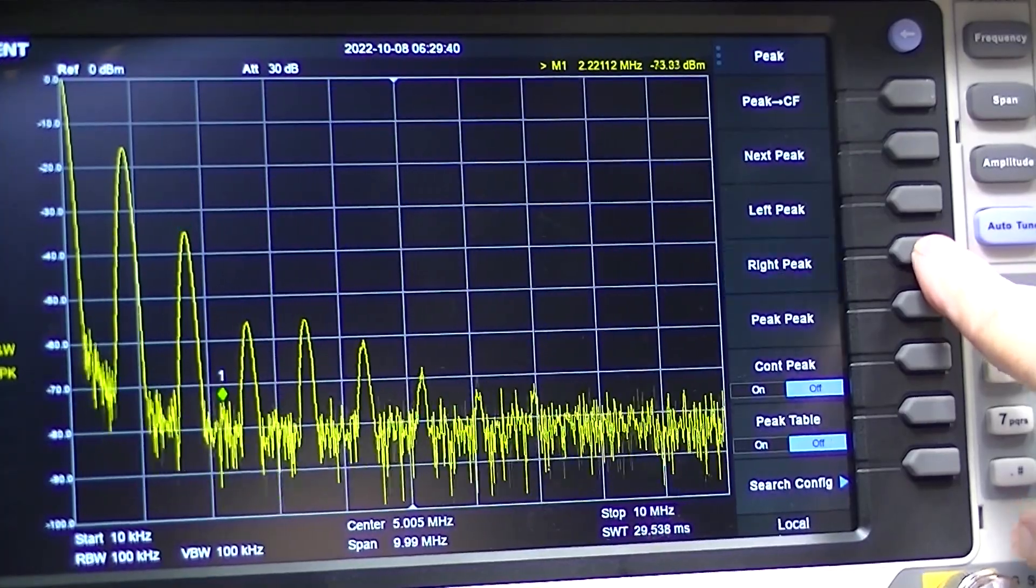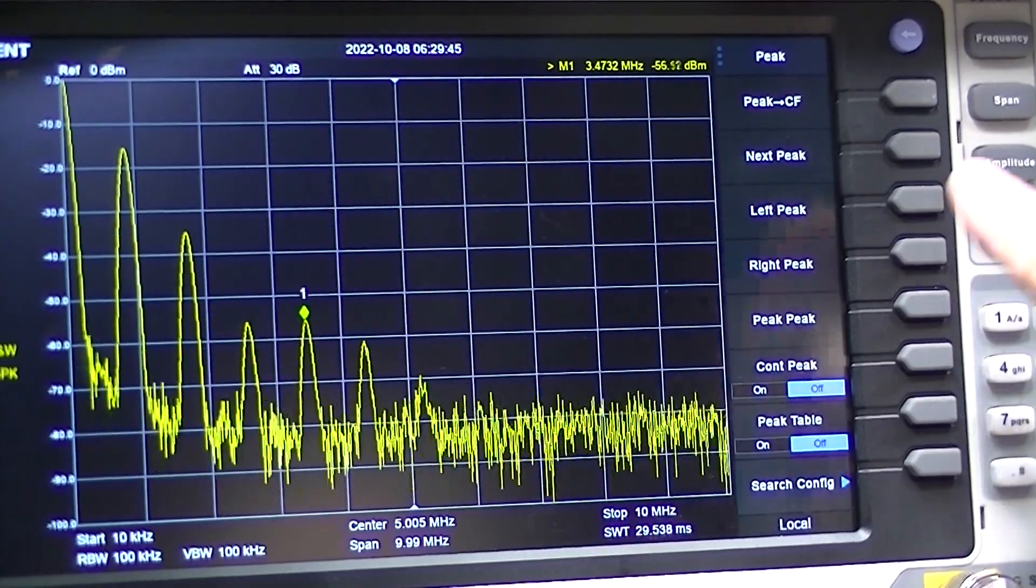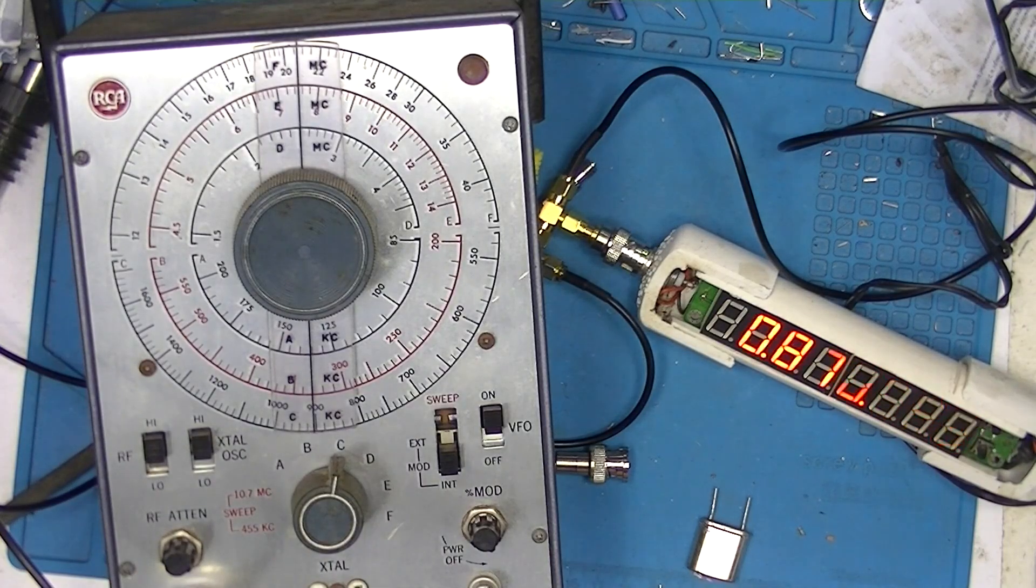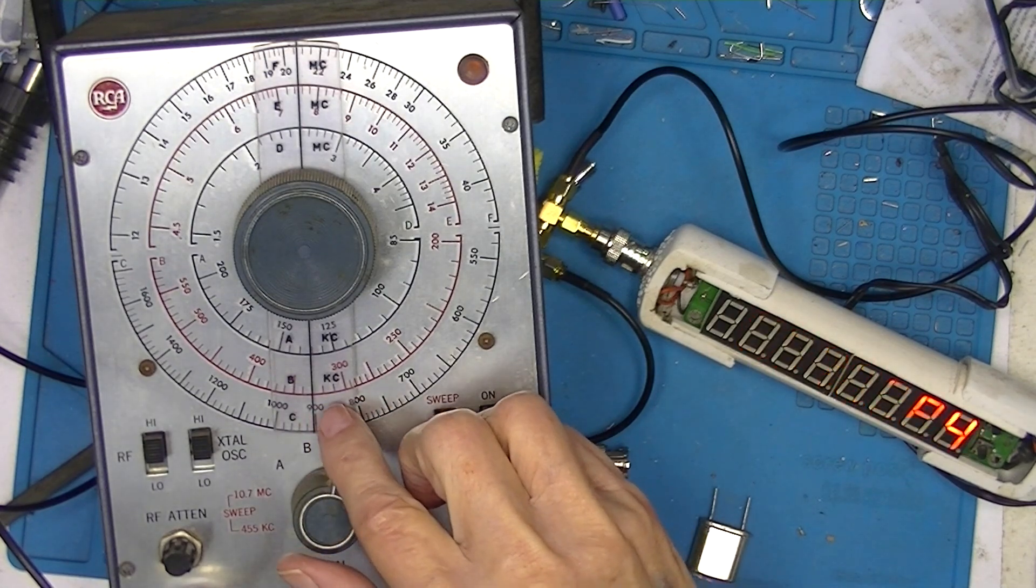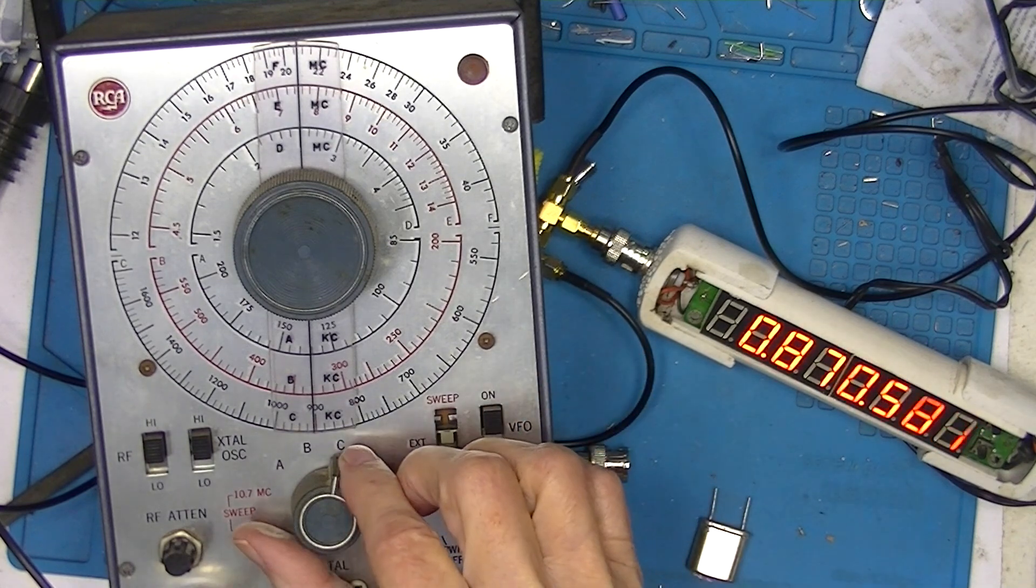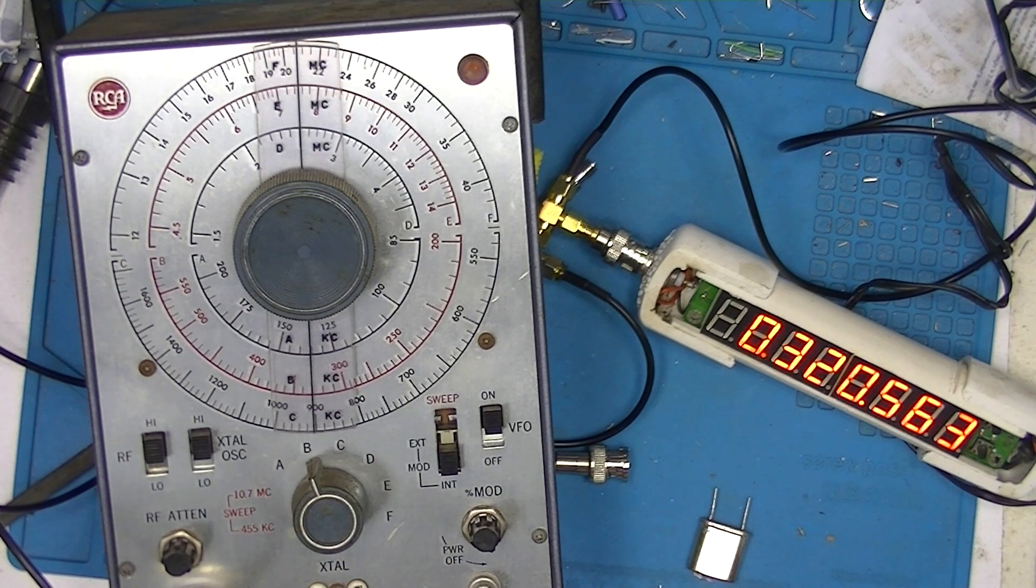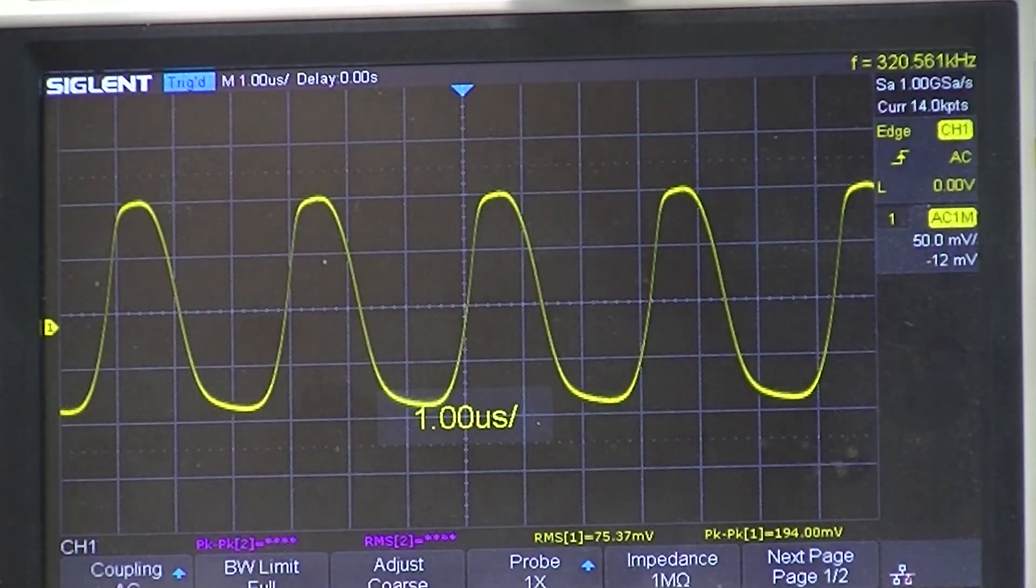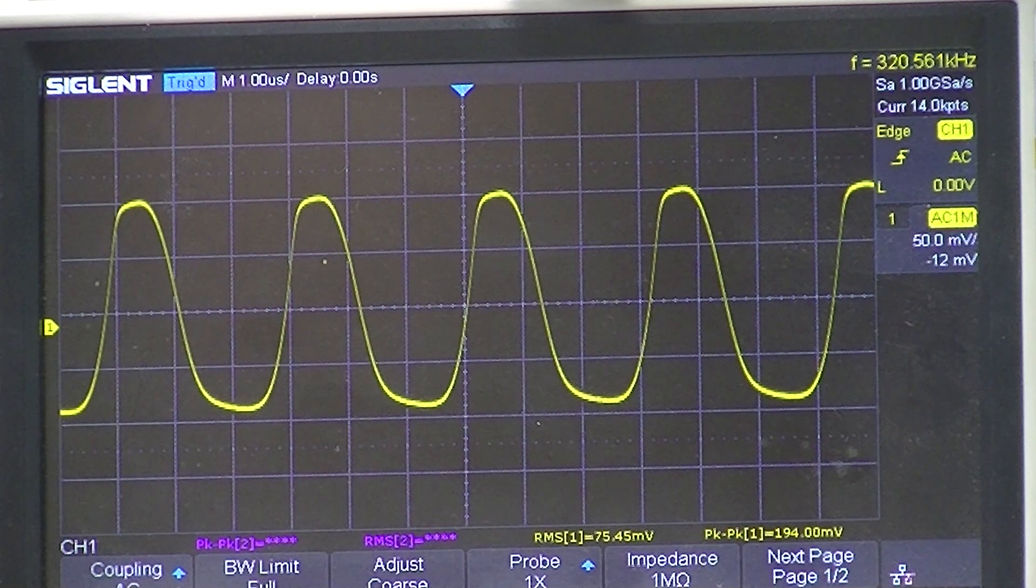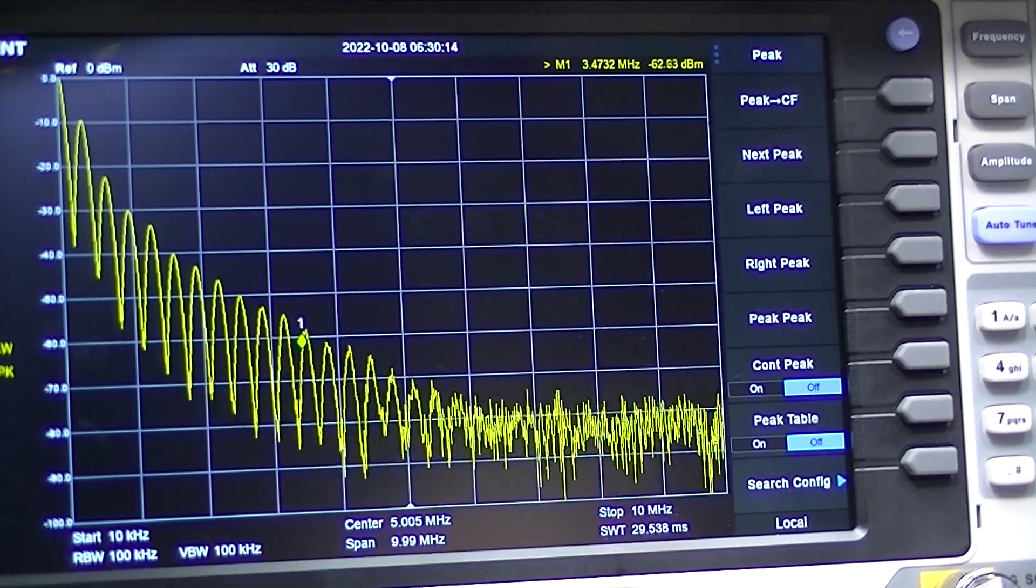And we'll go to B, which puts us at four hundred and sixty kilohertz. Not sure if we can read this. We've come back again a little bit. We've got a whole bunch of harmonics on the spectrum analyzer.